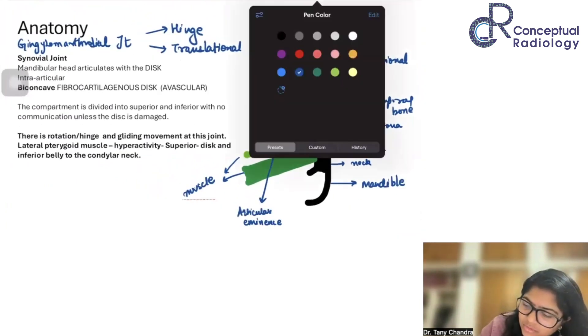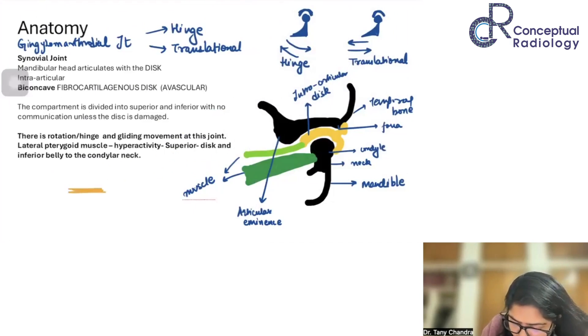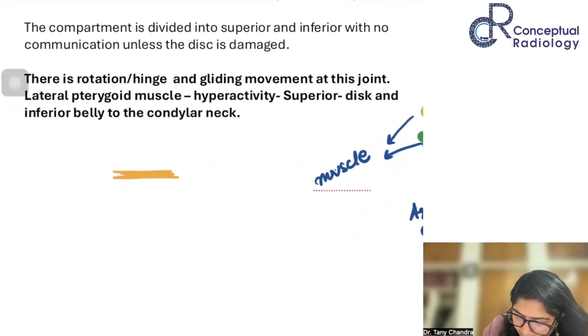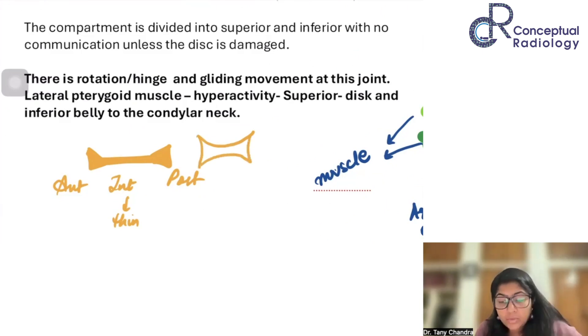Let us look at this disc a little more closely. What happens is that this disc has an intermediate part. It has an intermediate part. It has a thick anterior part and a thick posterior part. So, anterior, intermediate and the posterior part. This is the thin part. And now you can see that it's more like a bow tie kind of a thing. This is like a biconcave disc shape. This is how a normal disc is supposed to look like.